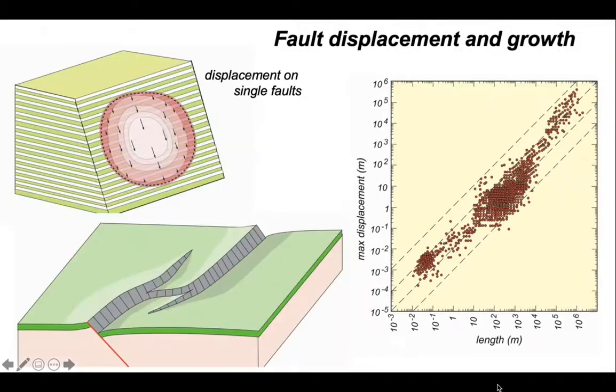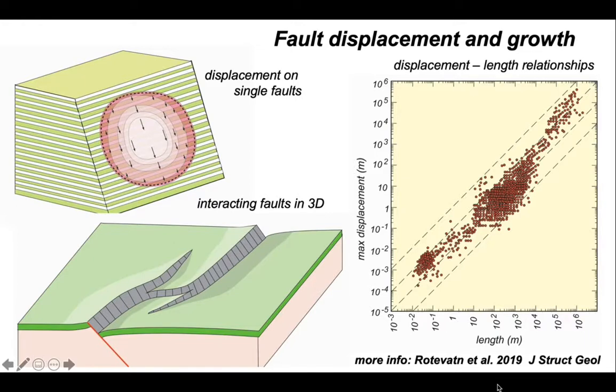So there we are - a quick introduction to fault displacement and growth. We've looked at displacements on single faults and seen that the displacements show bullseye patterns with a maximum in the middle decaying to zero at the edge. We've looked at three dimensions and the growth of faults and the formation of relay ramps, and we've used this information to try and understand something about the displacement-length relationships and whether they can be interpreted in terms of fault evolution.